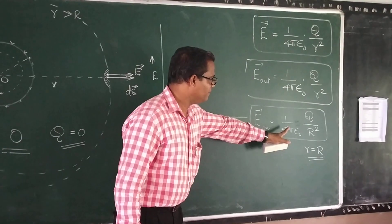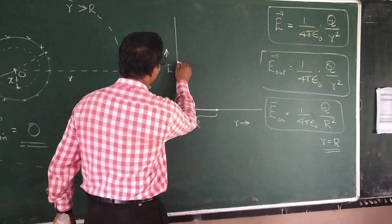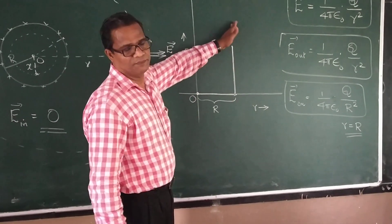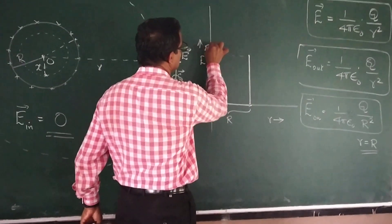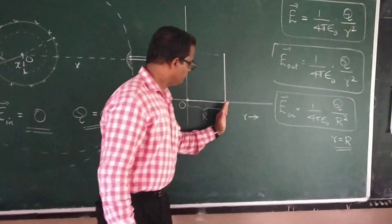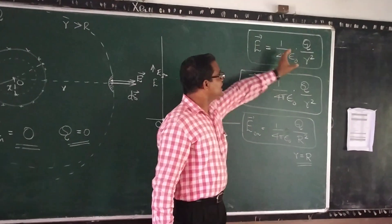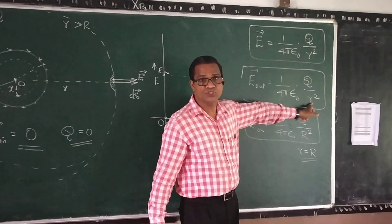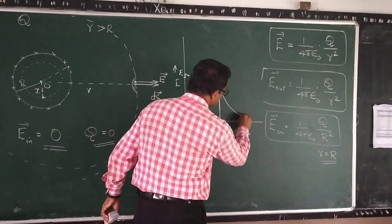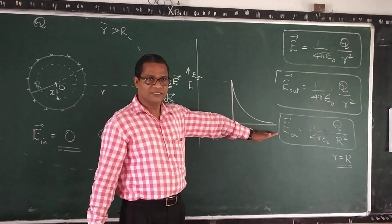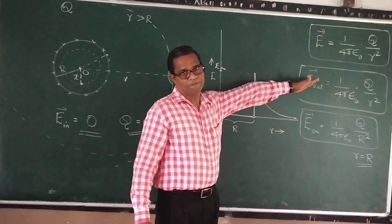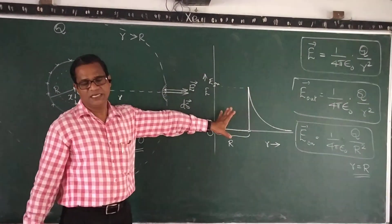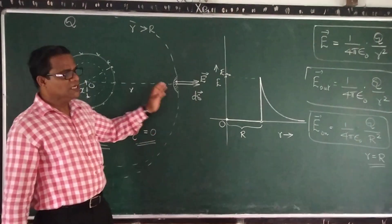When you reach just on the surface, the electric field jumps to a maximum value, E on the surface. The graph shows the field rising sharply to that maximum at r equal to R. After that, as we go away from the surface, the electric field outside is inversely proportional to the square of the distance. So the value decreases and goes parallel to the distance axis asymptotically, because the field becomes zero only at infinity. This graph is very important and can be expected in exams.